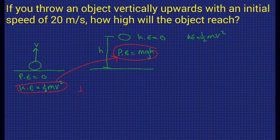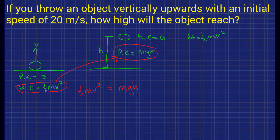Let's set half mv squared equal to mgh. One thing we have on both sides of this equation that we can get rid of is m — we do not need to know the mass of the ball. We cross out m from both sides, which leaves us with half v squared on the left equals gh.